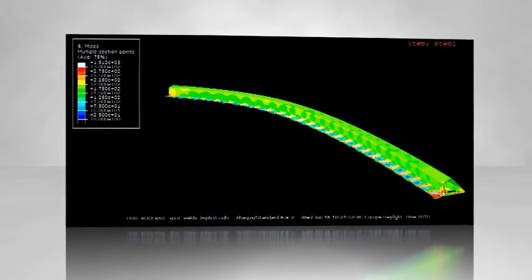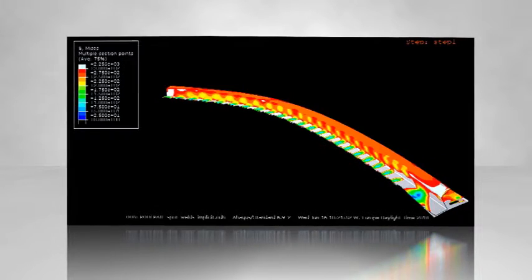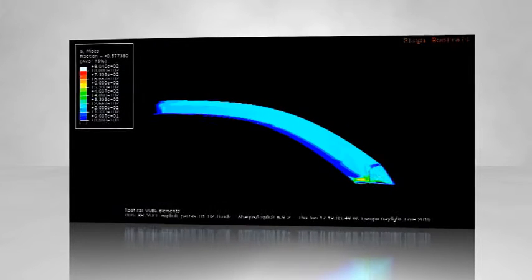The torsional stiffness of the roof rails is increased by using adhesive bonding by up to 50% in comparison to spot welding.